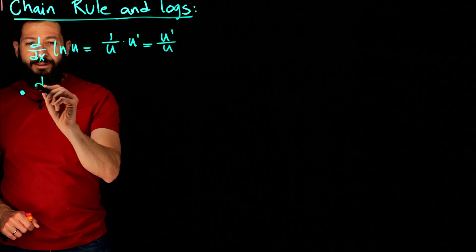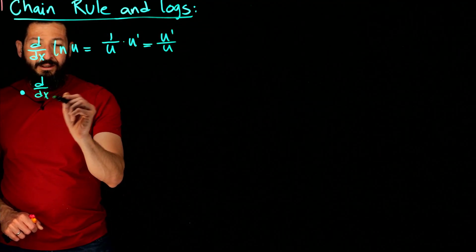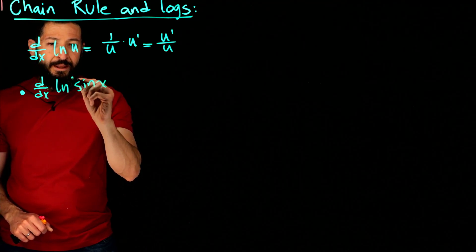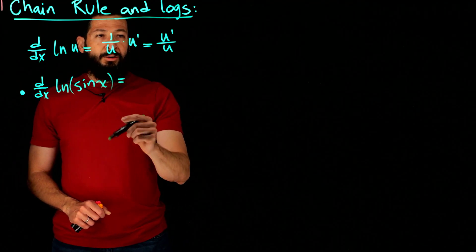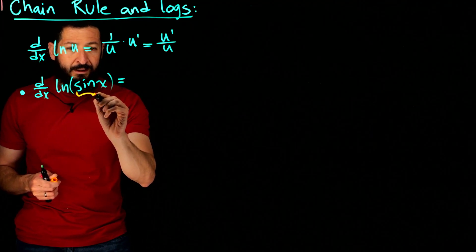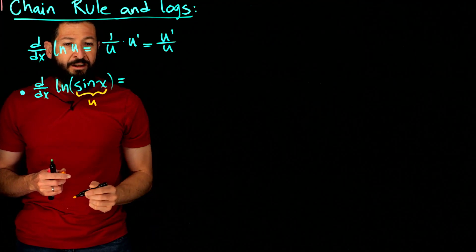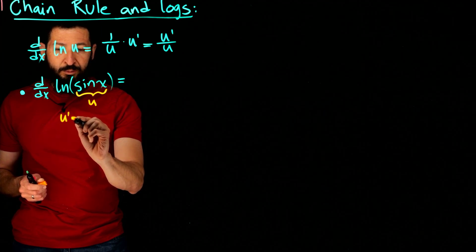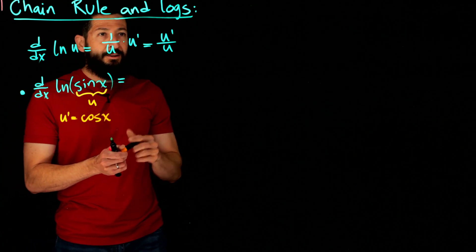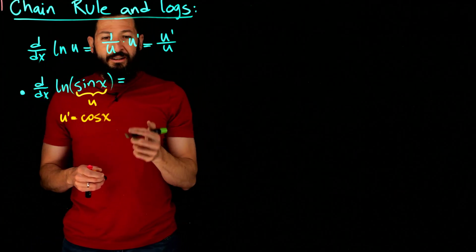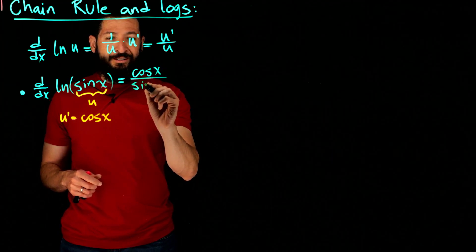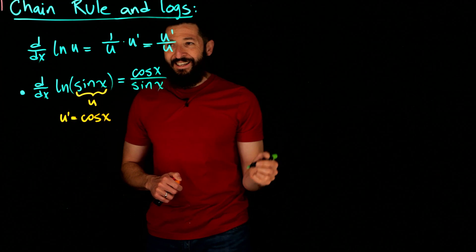For example, if you want to take the derivative of the natural log of sine of x, then u is sine of x, u prime is the derivative of sine which is cosine of x, and you plug into the formula to get cosine of x over sine of x.